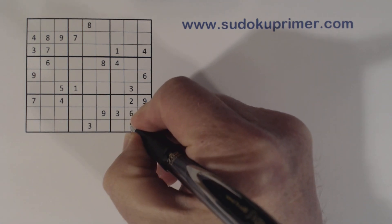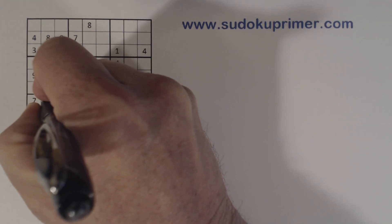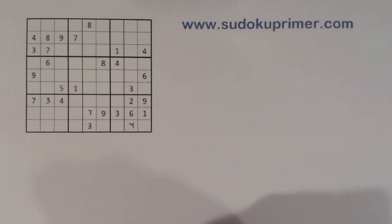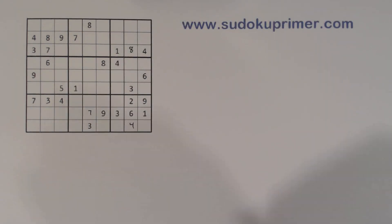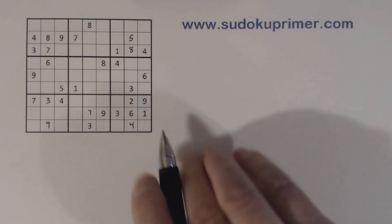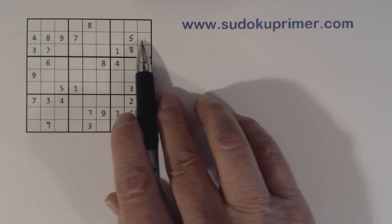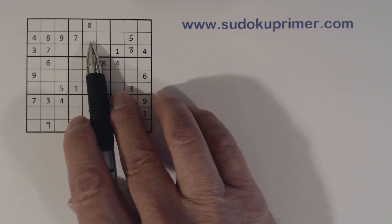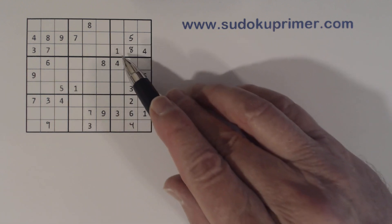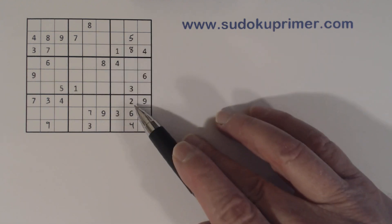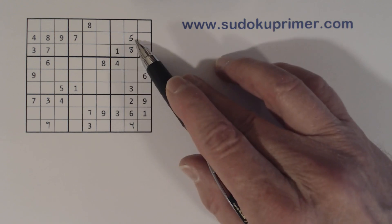To get started, I'm going to fill in some numbers that are easy. These should be pretty straightforward, but if you're not sure how I got them, leave a comment and I'll try to answer your questions. Now this 5 is a little bit harder to find. To find that, I looked at row 2 and found it was missing 1, 2, 3, 5, and 6. And this cell sees a 1, 2, 3, and 6, so we know that's a 5.